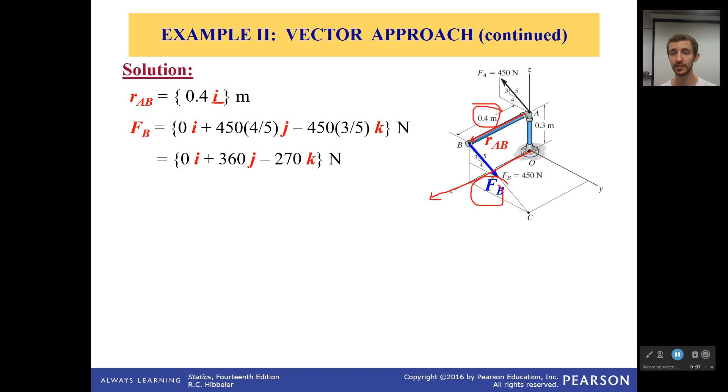And then our force right here, luckily for us, it gives us this nice little slope triangle, which makes things a bit simpler. So it's not going in the x direction at all. You can see it's in the y-z plane right here. And it goes 0i, and I have 450, because that's the magnitude, times the component that's in the y direction over the hypotenuse. So that's 4 fifths.